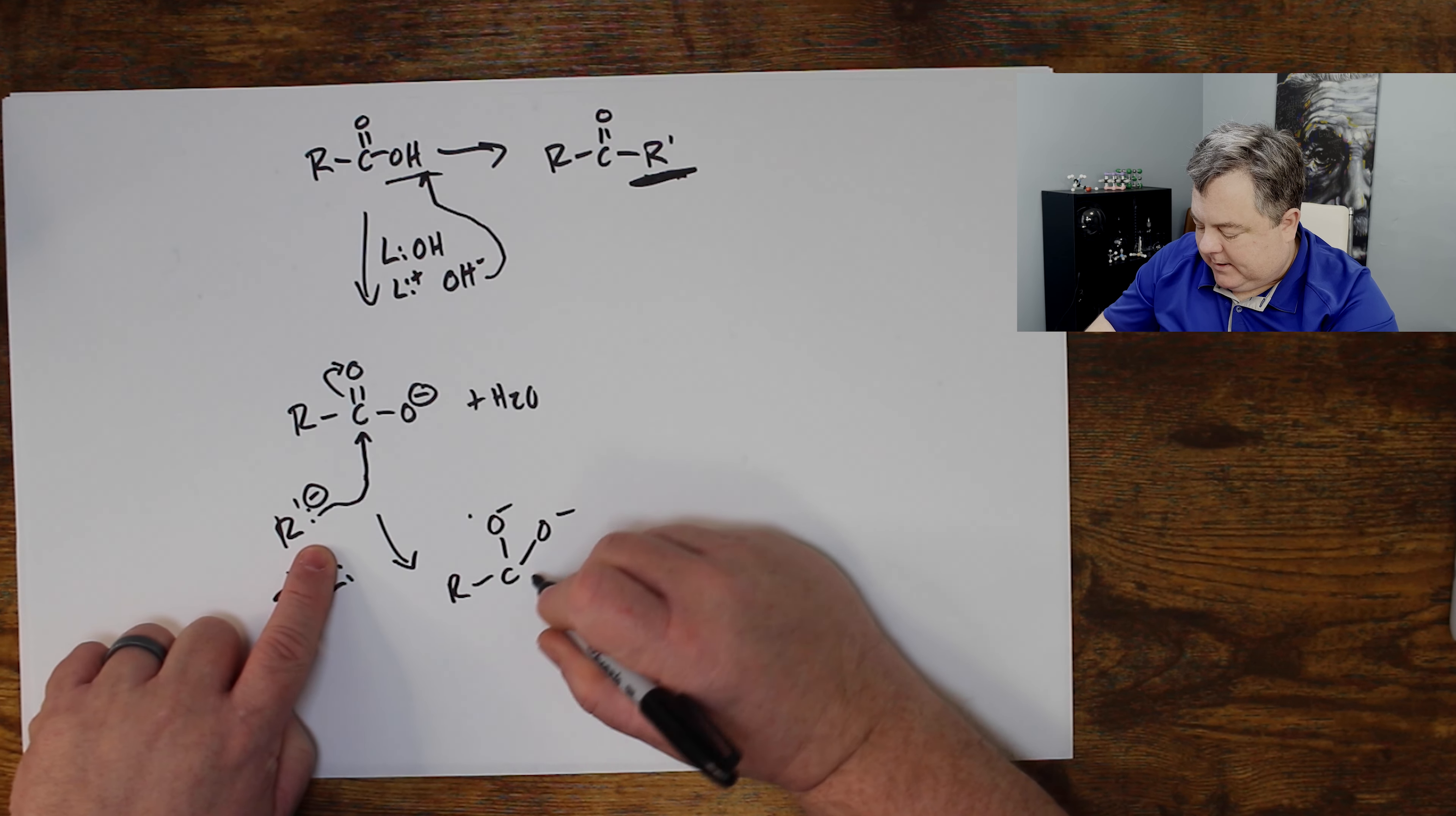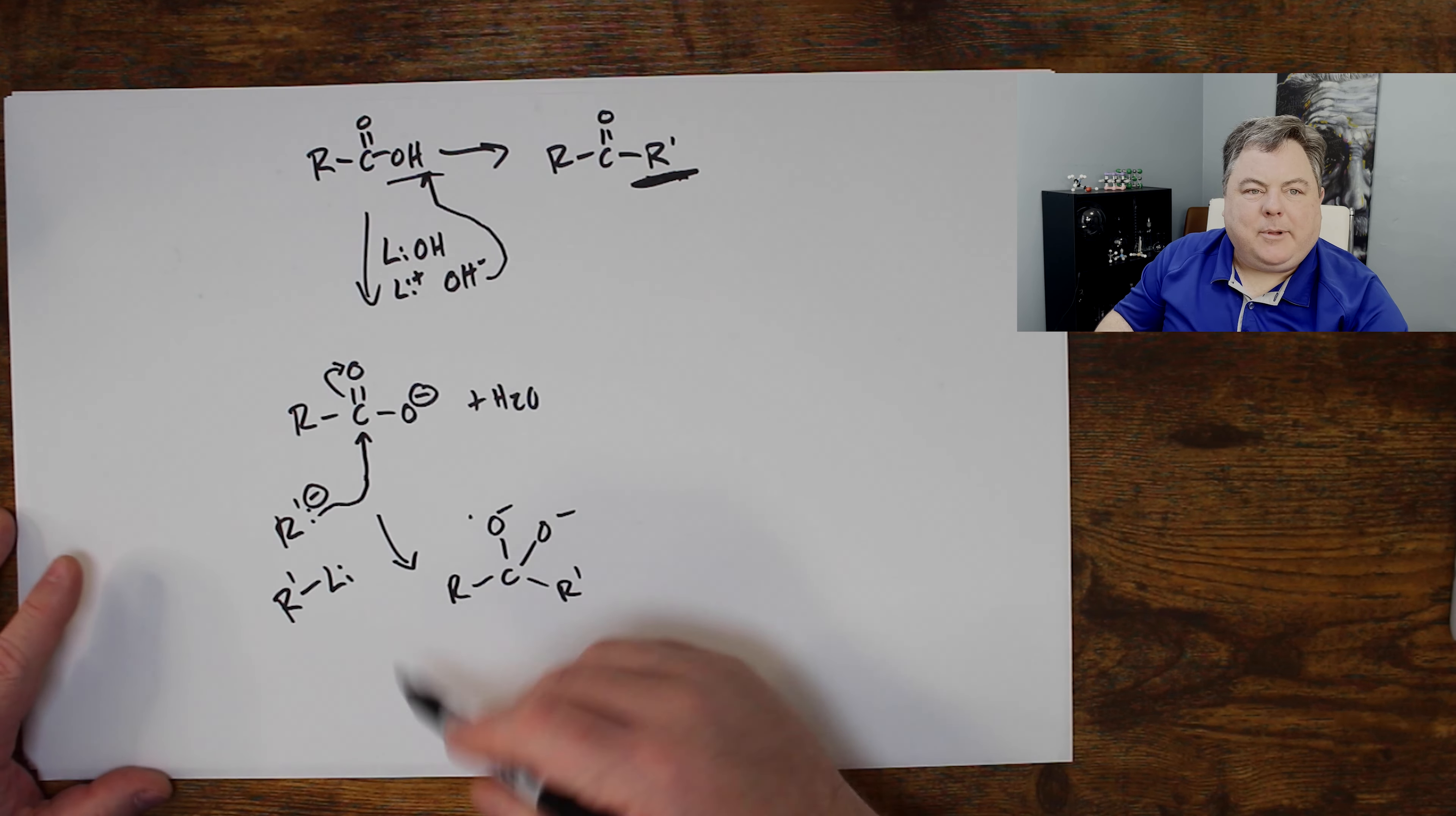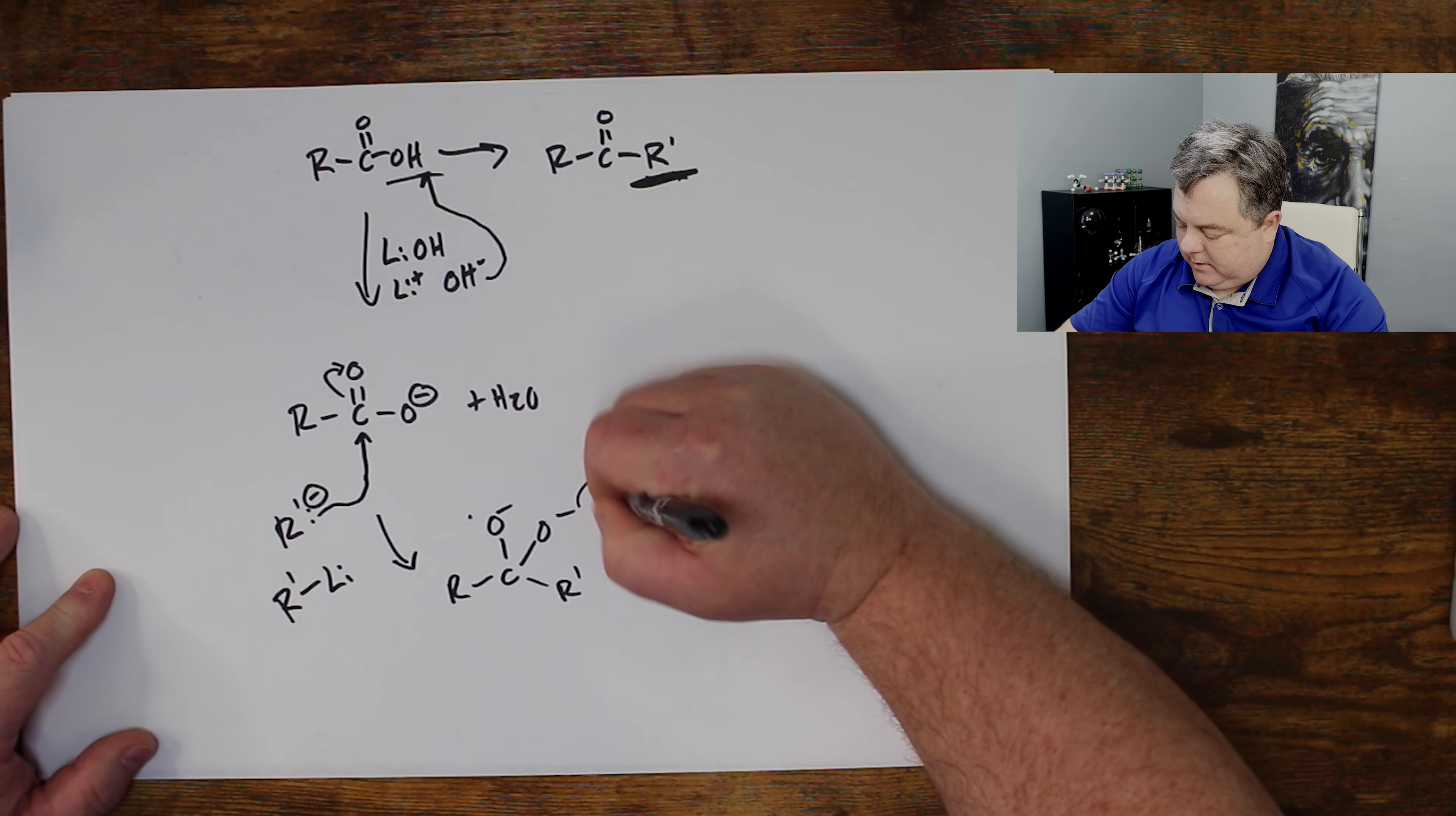So now I have my R, my carbon into an O minus. I still have this O minus on there. And now I have R prime on there. So I get this doubly negative compound.